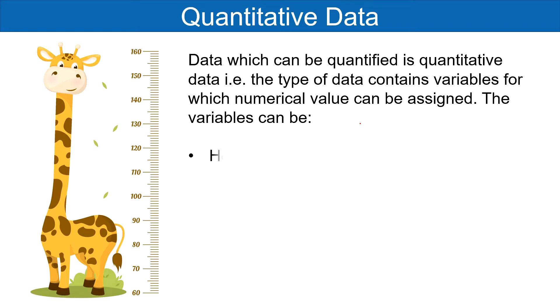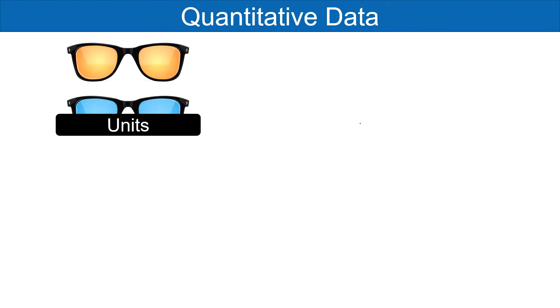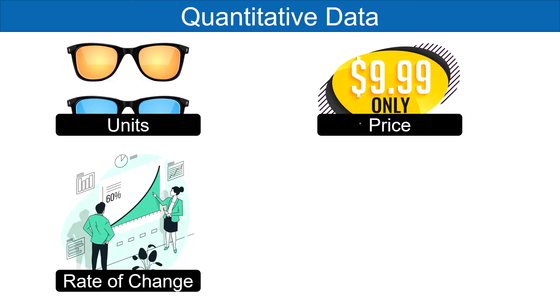The variables can be height, weight, age, test scores, etc. Quantitative data can be expressed in numbers and statistics such as units, price, rate of change and ratios.